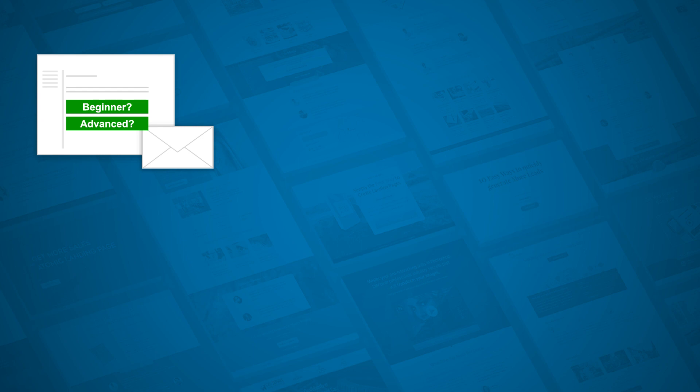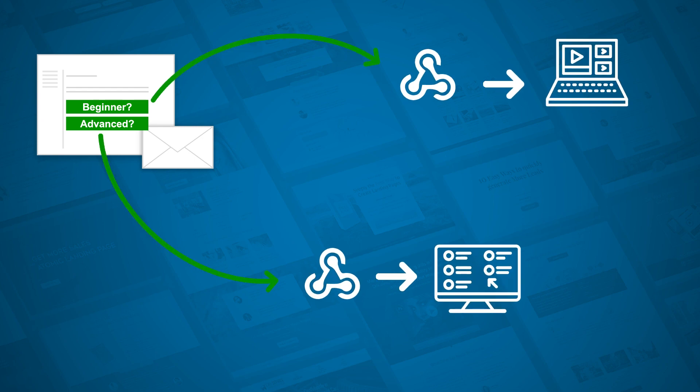This automation is super powerful because of all the different ways tags can be added and removed. You can have students sort themselves into beginner or advanced categories by clicking a link in an email, and then each group will get access to a different set of courses. Or you can have students continue on to a follow-up course after they complete a basic course, or even have other tools assign a tag in your email service which will in turn give access to a course or product.